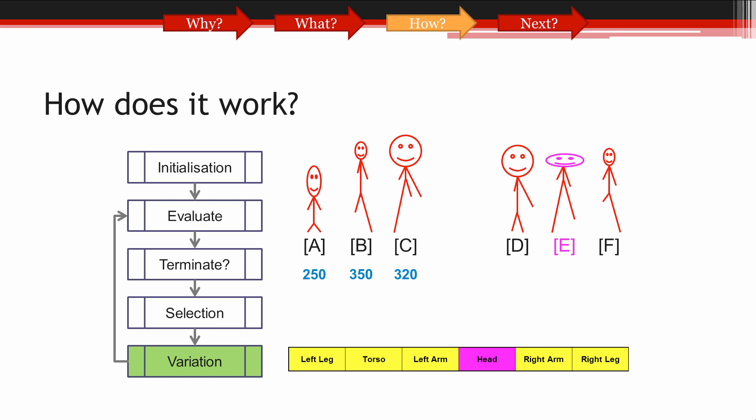Here, you can see we've selected solution E at random, selected its head gene at random, and added some random number which has made its head wider. The six solutions you now see will be taken to the next generation as we loop back round to the evaluation stage.